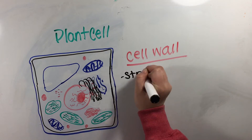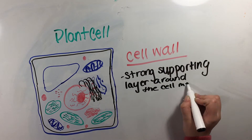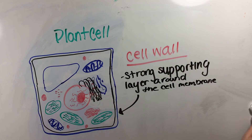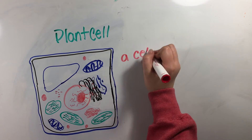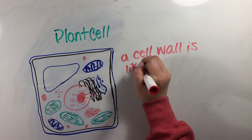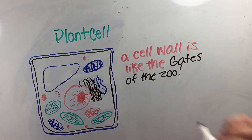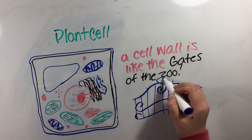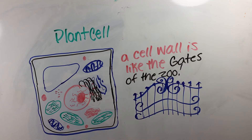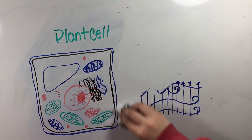The cell wall is a strong supporting layer around the cell membrane, acting as a protector. The gates around the zoo are like the cell wall because they are a stiff and rigid structure used to protect the zoo.